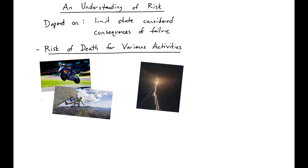When we talk about risk, we'll have differing levels of risk of death for different activities. So if you're a motorcycle racer or a mountain climber, you would be more likely to die per year than if you were someone walking around waiting to get struck by lightning.